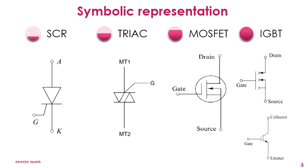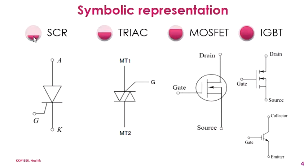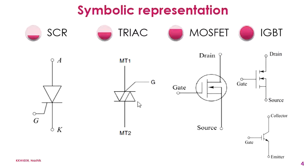Now we will see the symbolic representation of these four devices. The Silicon Controlled Rectifier is a three-terminal device named as anode, cathode, and gate terminal. The gate terminal is the control terminal for the SCR. The TRIAC also has three terminals: MT1 (Main Terminal 1), MT2 (Main Terminal 2), and gate. In TRIAC, two SCRs are connected back to back, and MT1 and MT2 stand for Main Terminal 1 and Main Terminal 2.